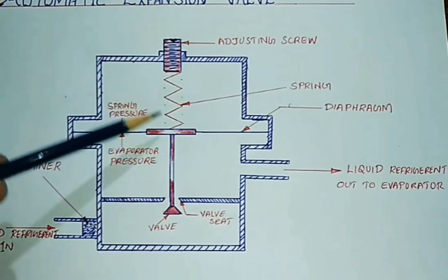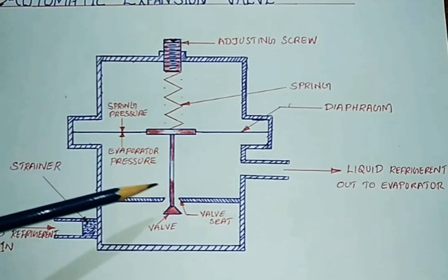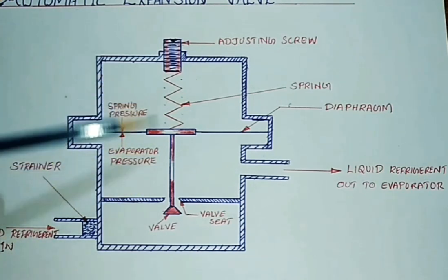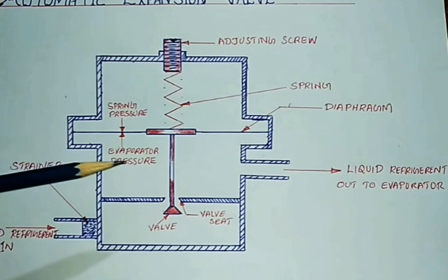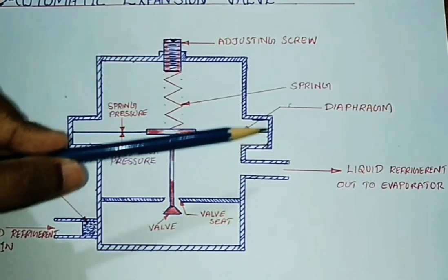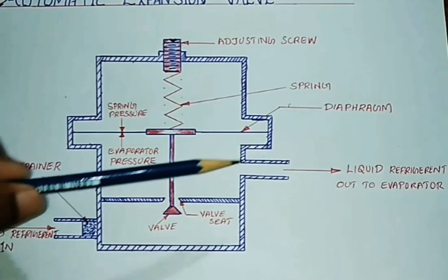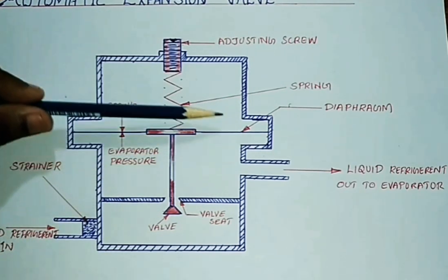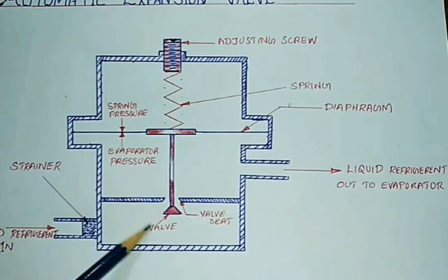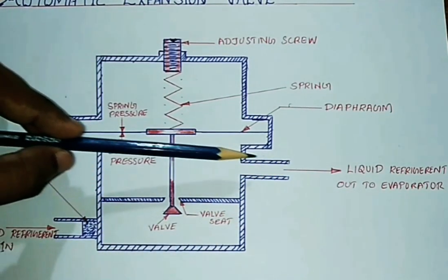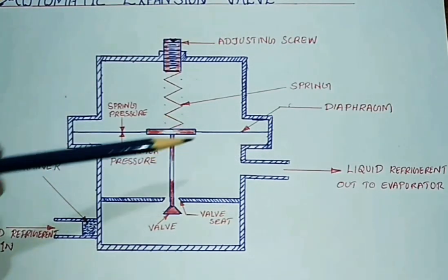When we adjust the valve to the set point, we need to adjust both the pressure and spring pressure. We need to adjust the evaporator as well. When we evaporate the liquid, we put pressure on the evaporator.